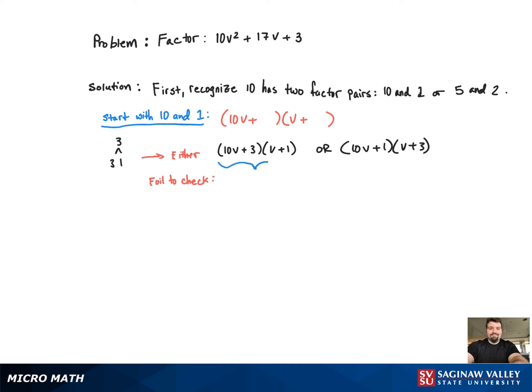When we work out the first one, what do we get? We get 13v for the middle term, which doesn't work. And the second one, what do we get for the middle term? 31v, which also doesn't work.